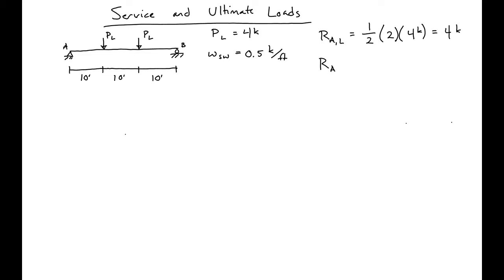If we look at our reaction due to our dead load for self-weight, we'll have half of our total length, thirty feet, times the load 0.5 kips per foot, and this will give us a load of seven and a half kips.